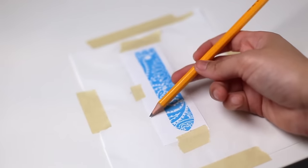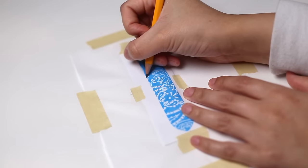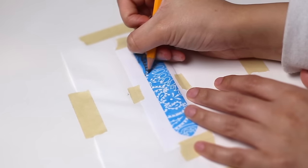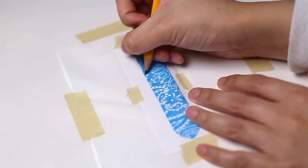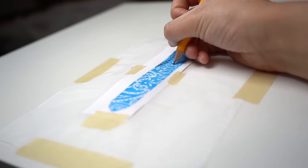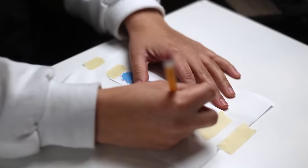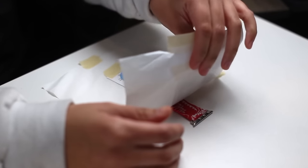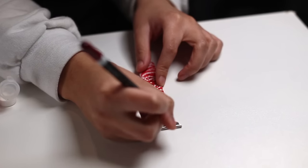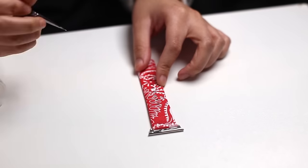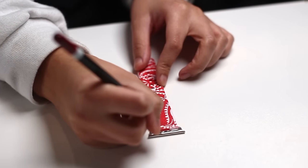Basically what's happening while we color the image in is the white graphite is transferring to the watch band in the areas we apply enough pressure to. So I'm just thoroughly going over the pattern with my pencil to get the best transfer possible. Once you've gone over the whole image, you can remove the paper to reveal your white lines underneath. It comes out as sort of a colored pencil looking finish, so I went over all the white lines again with flat white paint to give it that finished painting look.